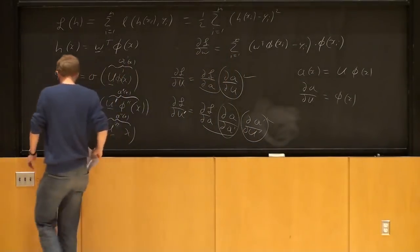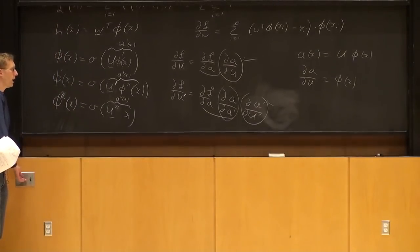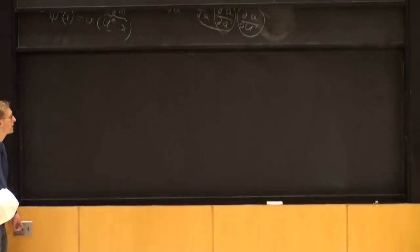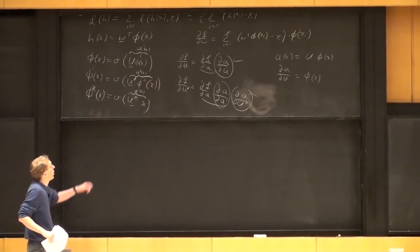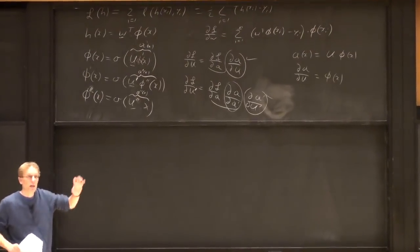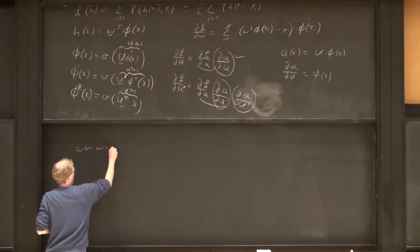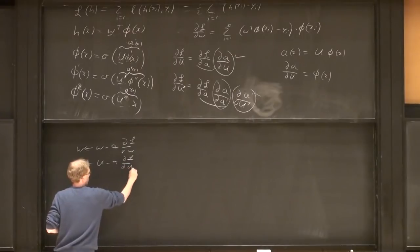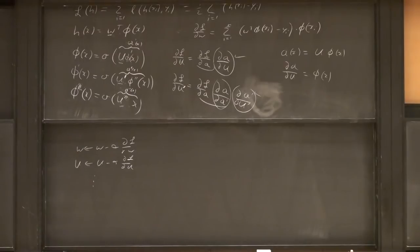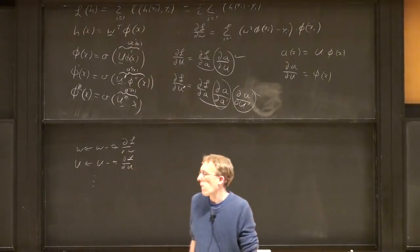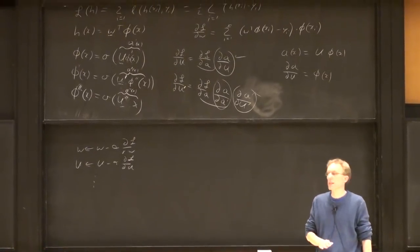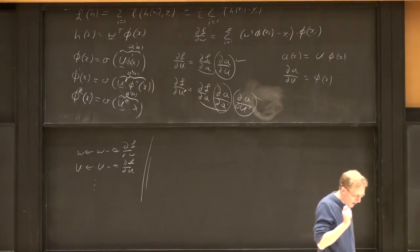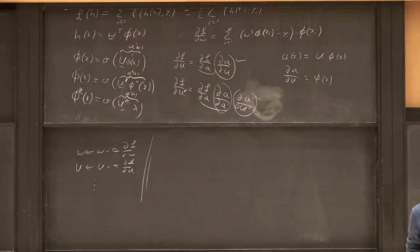Once you've done the homework, this will be crystal clear. Basically, we have our network, we get all the gradients, and we do gradient descent: W becomes W minus alpha times dL/dW, U becomes U minus alpha times dL/dU, and so on for all parameters. Then you start over. There are two more important subtleties compared to what we've done before.